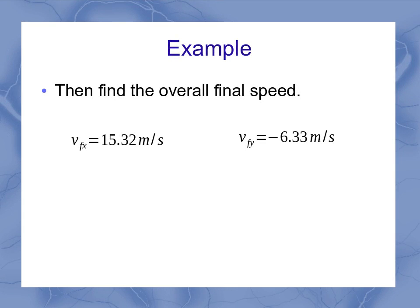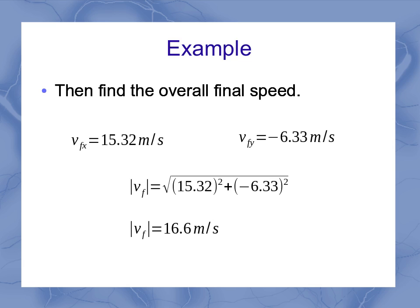To find the overall final speed, again, I need the magnitude of the final velocity. So if I plug those into my typical magnitude formula, squaring each of the components, being careful with my parentheses on the negative sign, I find that I had 16.6 meters per second for my final speed that it hit the wall.